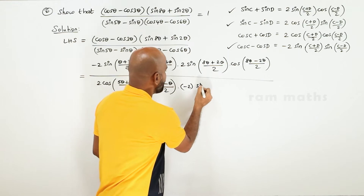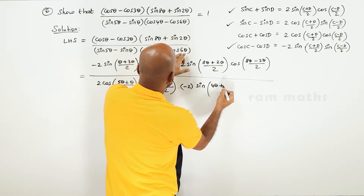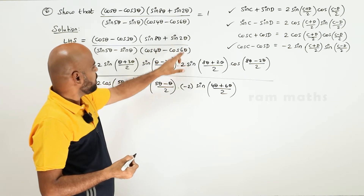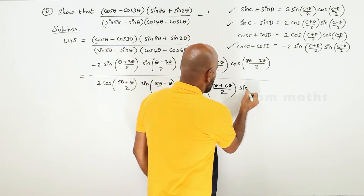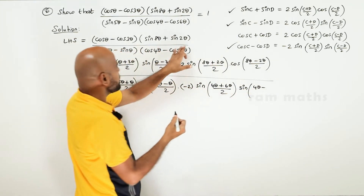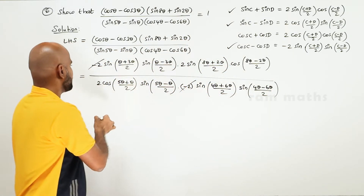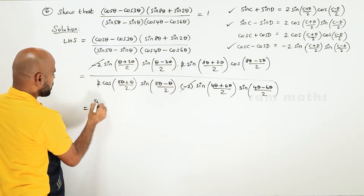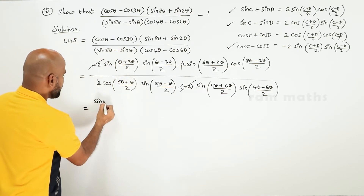Sin (C plus D) by 2 — so 4 theta plus 6 theta by 2. Sin (C minus D) by 2 — into minus 2. The minus 2 cancels, and the 2 cancels. So sin (3 theta plus theta) gives 4 theta, divided by 2 gives 2 theta.